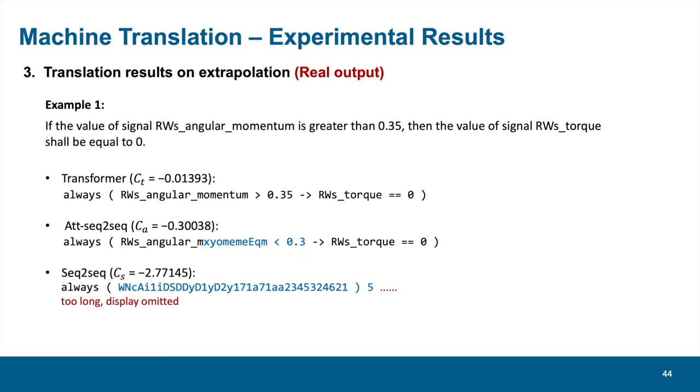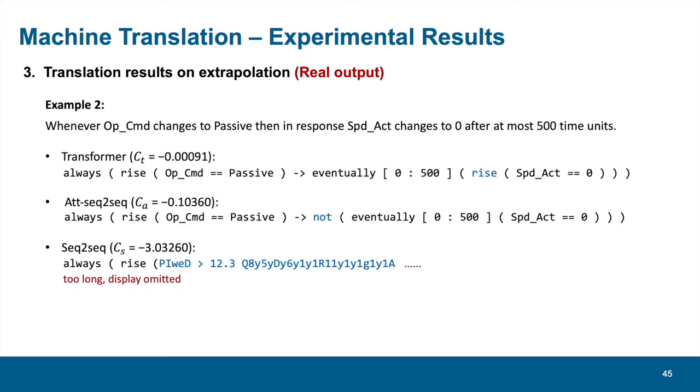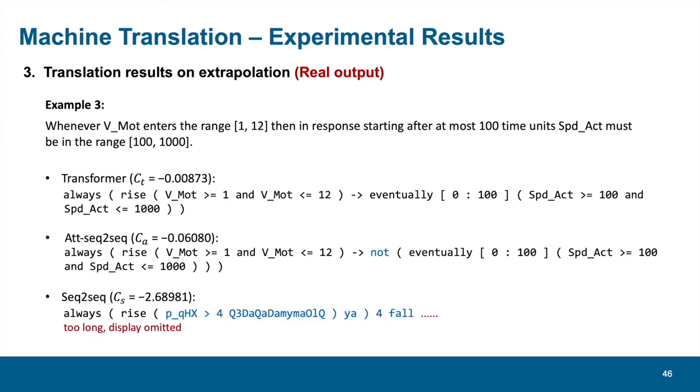The numbers of CT, CA, and CS roughly denote the logarithmic value of output confidence. In example 2, Transformer tends to add a NOT operator before the atomic proposition wrapped inside an F operator. While attention seq-to-seq model would reverse the original meaning by adding a negation operator in front of the corresponding temporal phase. Still, seq-to-seq performs very badly. In example 3, Transformer translates the requirement correctly, while attention seq-to-seq makes the same mistake.